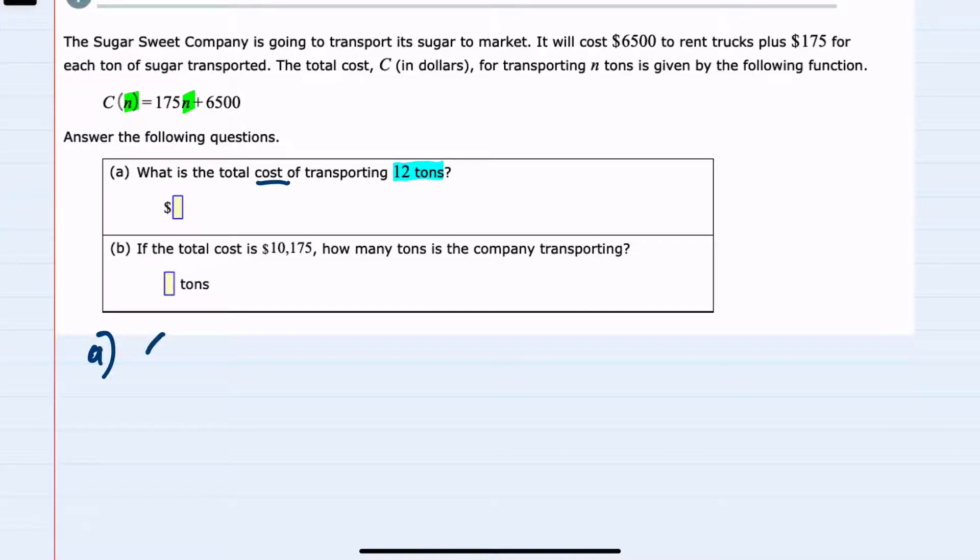we can substitute. We know the function cost for 12 tons, so we would substitute 12 each time for each n in the function. And since we only have one, we replace that n with 12.